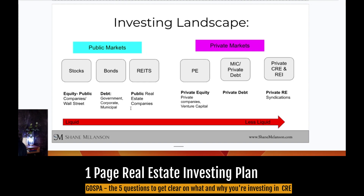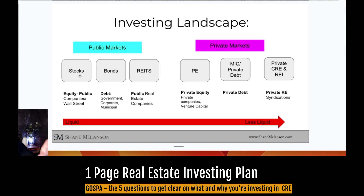I heard this on a podcast from someone named David Stein, who broke down the investing landscape probably the best way I've ever seen it. You've got public markets — stocks, bonds, REITs — and private markets. In private markets, the equivalent of a stock is private equity or venture capital; instead of bonds you have mezzanine or private debt; and instead of public REITs you have private real estate investment trusts, syndications, or investing on your own.